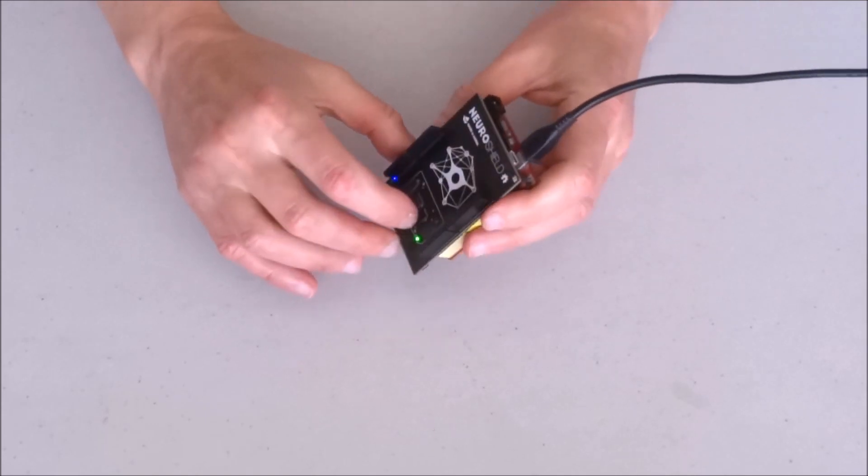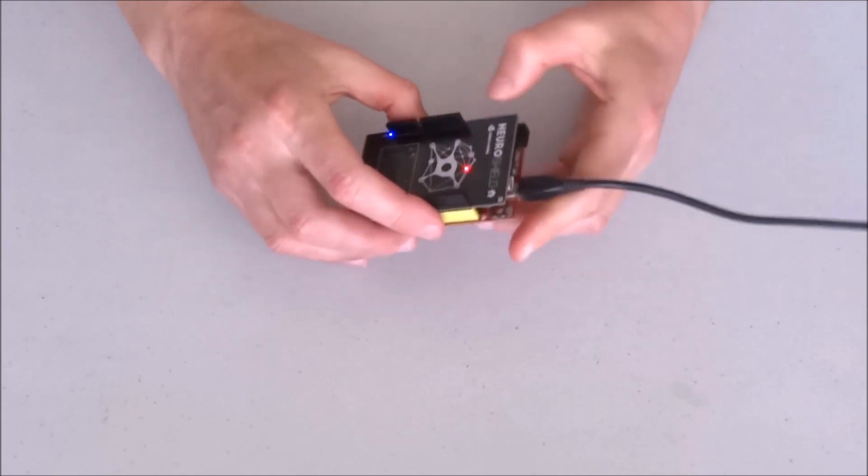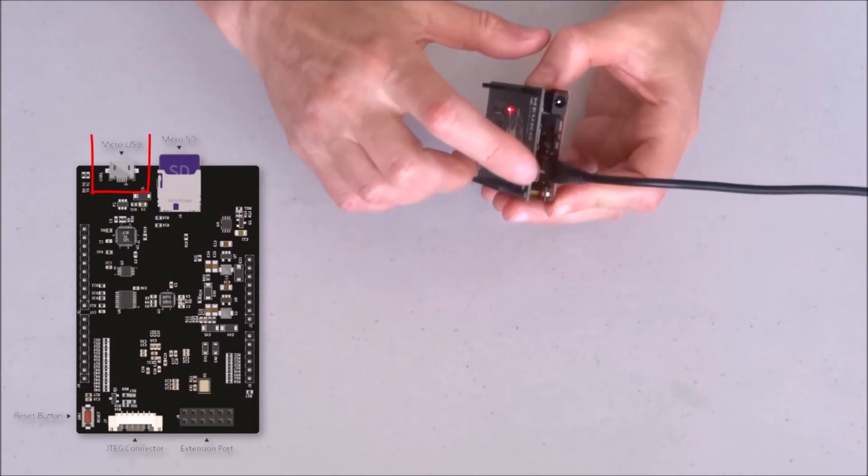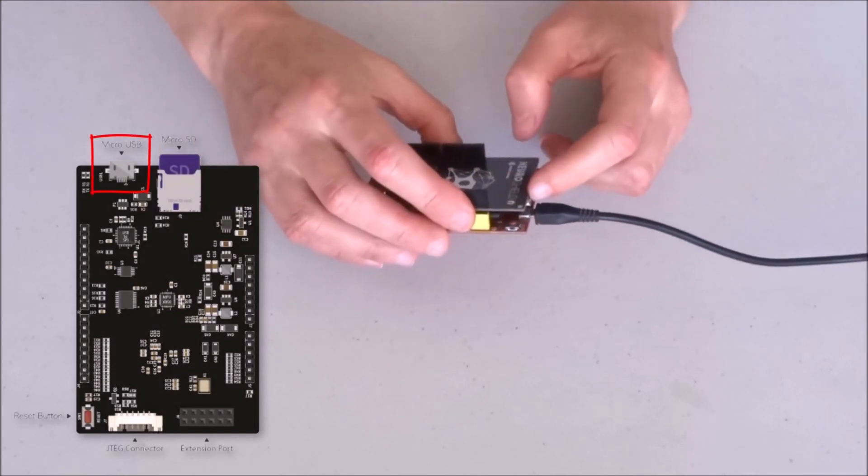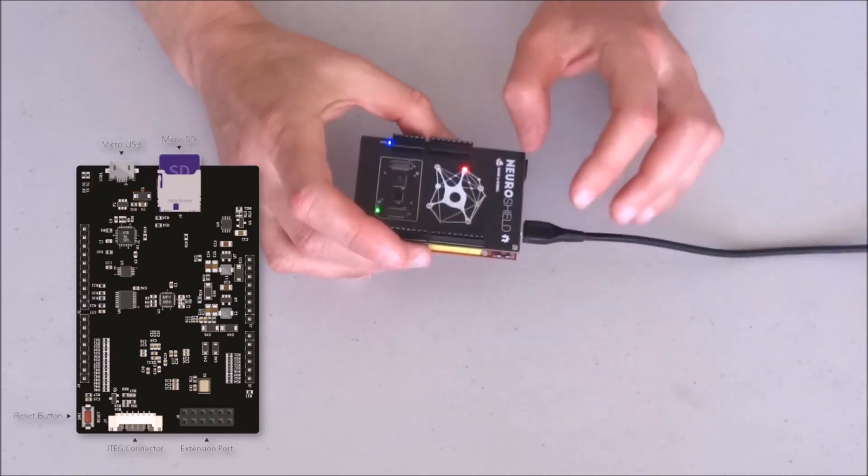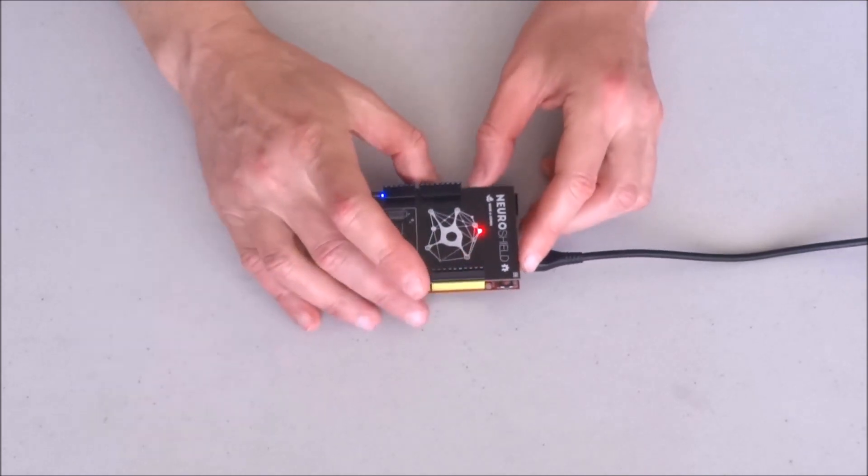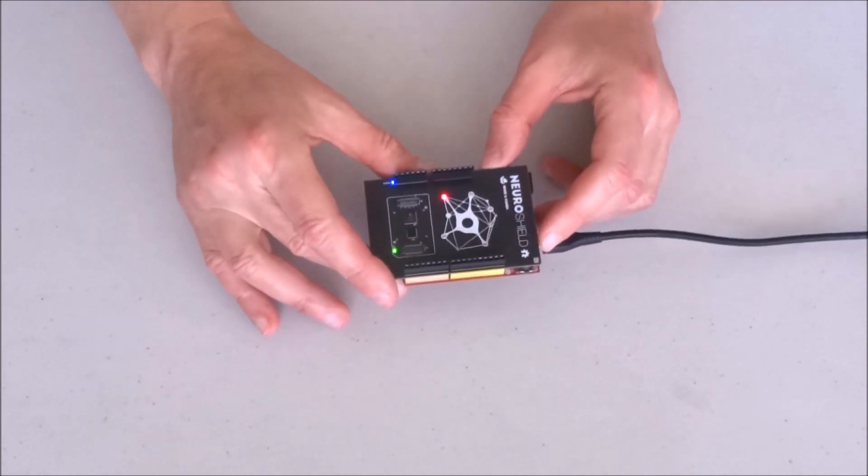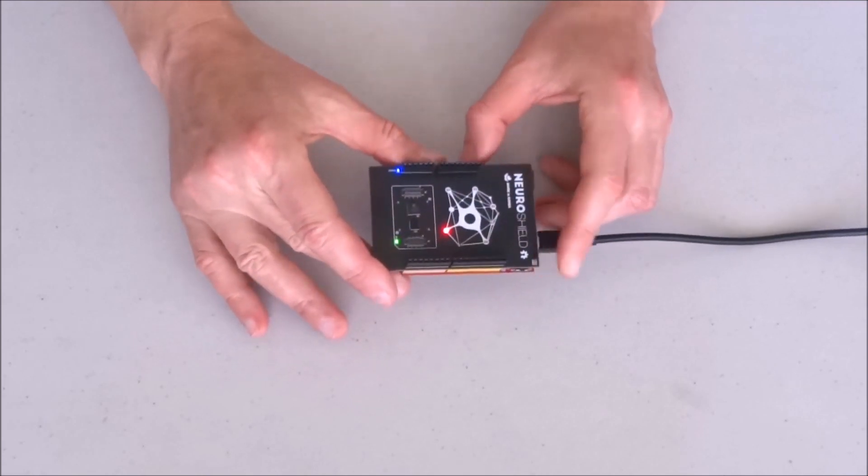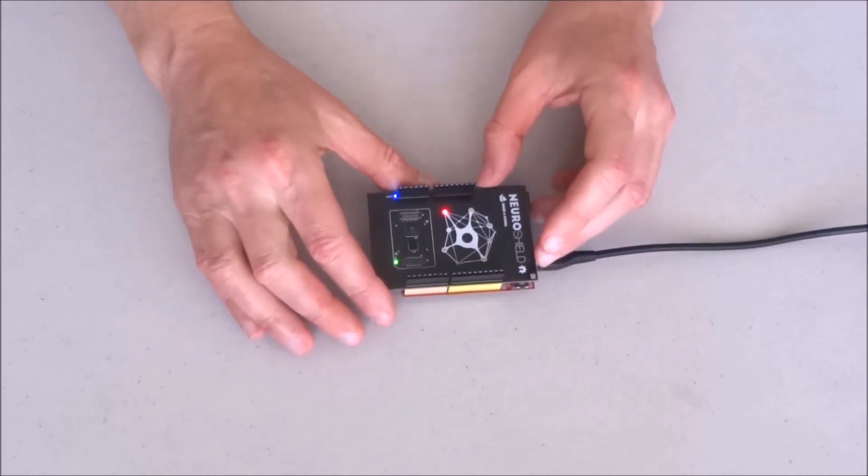And now it is ready for us to program the Arduino to start using the classifiers. By the way, the classifiers can be accessed both from the Arduino and through this USB port. So you can just connect the shield through USB to a computer and access the knowledge and the classifiers. I haven't played with this functionality yet.